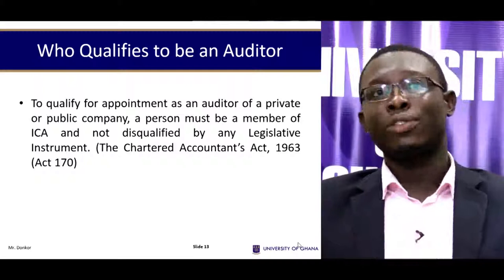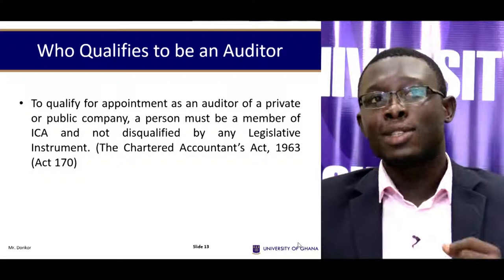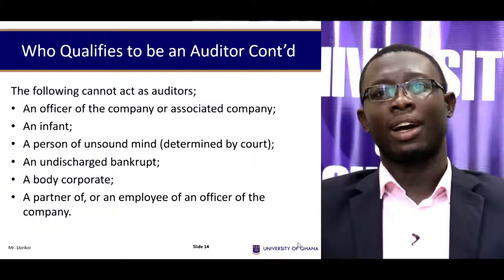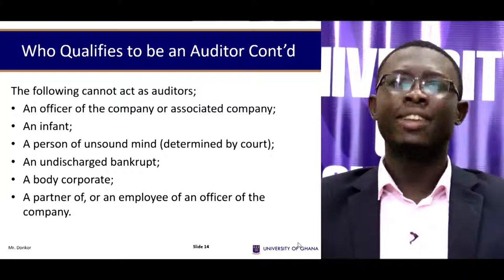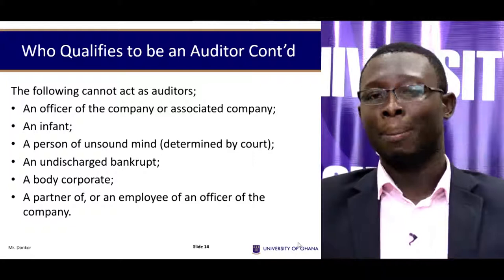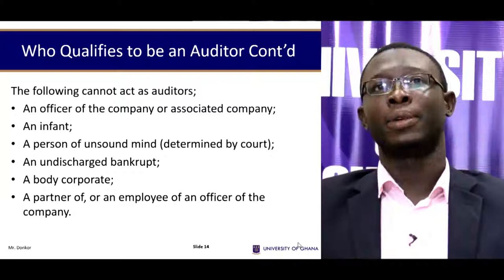To qualify and be appointed as an auditor of a private or public company, a person must be a member of ICA — the Institute of Chartered Accountants in Ghana — and not be disqualified by any legislative instrument. Those who cannot be auditors include: an officer of the company or associated company, an infant, a person of unsound mind as determined by a court, an undischarged bankrupt, a body corporate, and a partner or employee of an officer of the company.